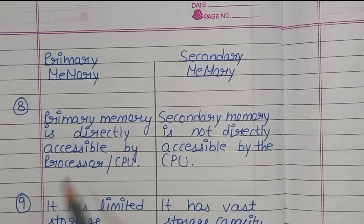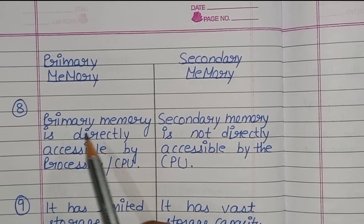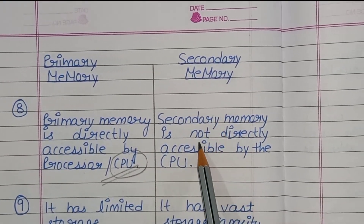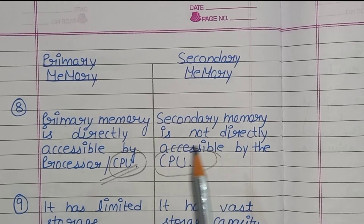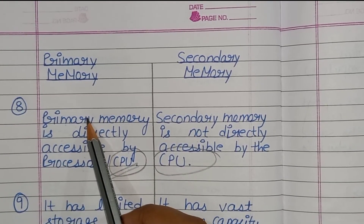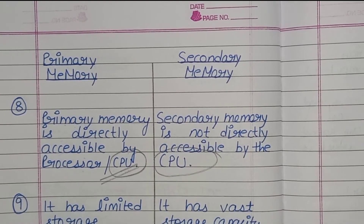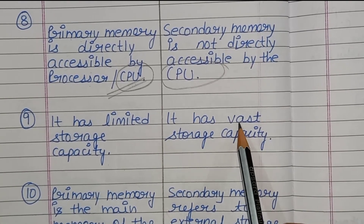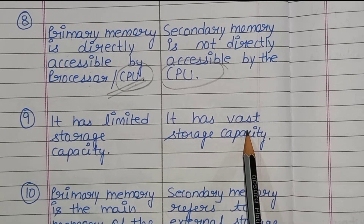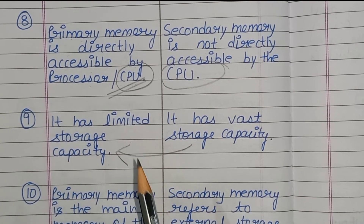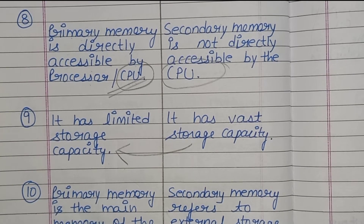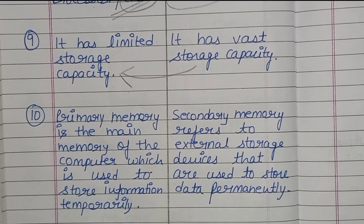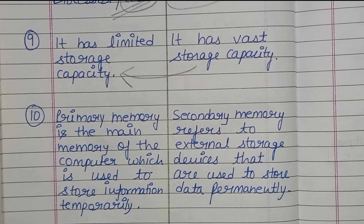The next difference is primary memory is directly accessible by the CPU, or central processing unit, but secondary memory cannot be accessed directly by the CPU. Additionally, primary memory has limited storage capacity.